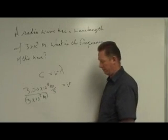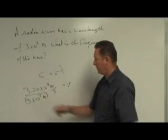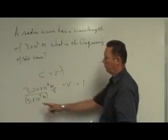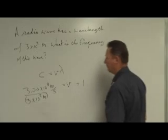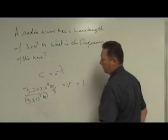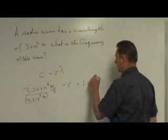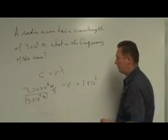Now you remember your exponential mathematics here. The 3 divided by the 3 equals 1. Now I've only got one significant figure so I'll leave it at that point. And your 10 to the 8 minus 10 to the second gives us 10 to the sixth. And that's our frequency.